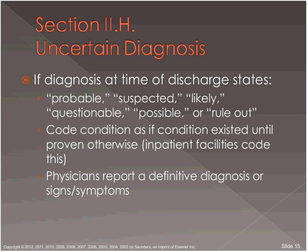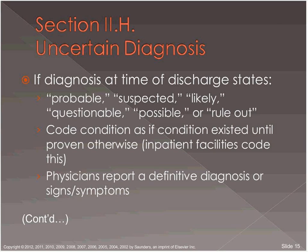For uncertain diagnosis: if the diagnosis at the time of discharge states it is probable, suspected, likely, questionable, possible, or rule out, then you continue to code the condition as if it already existed until proven otherwise — but this is only for inpatient facilities. In outpatient settings, physicians must report a definitive diagnosis or report the sign and symptom the patient is having. On an inpatient basis, you can continue to code a condition like gastric reflux disease even if it's still questionable.